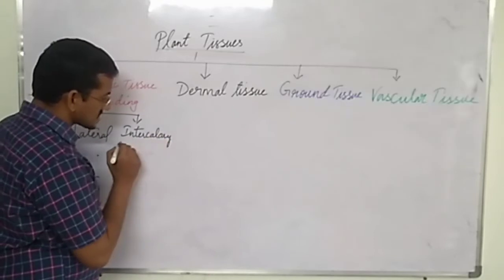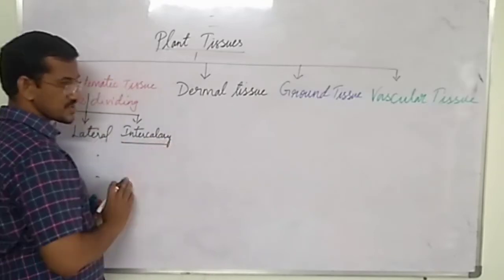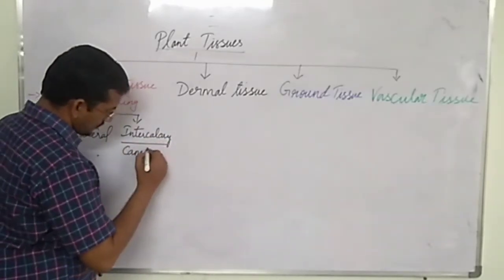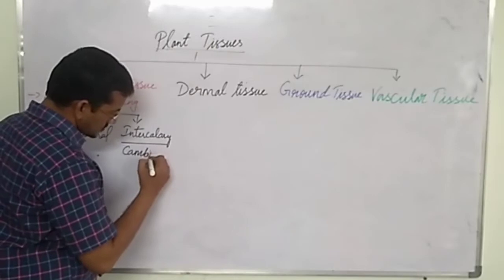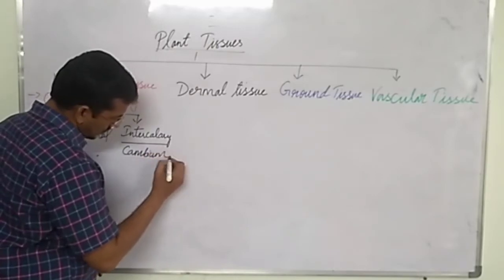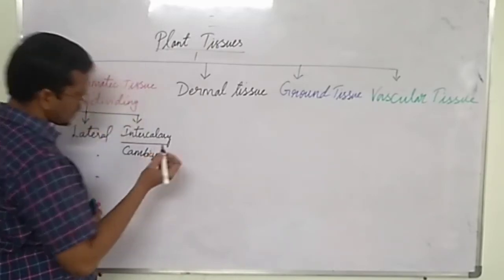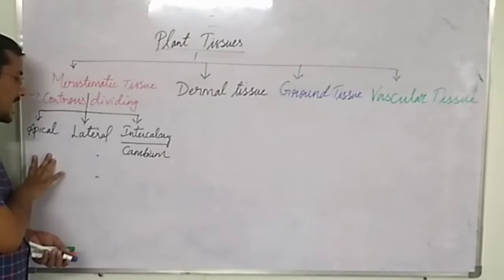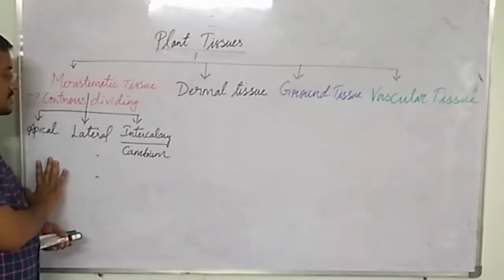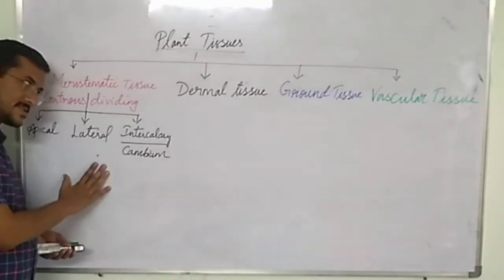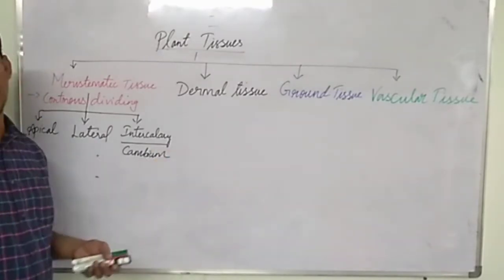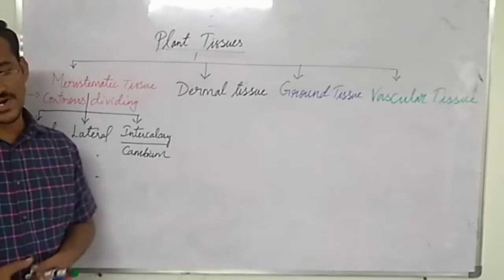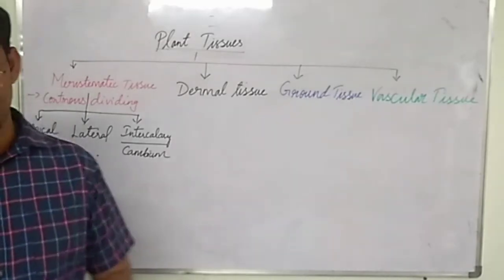Intercalary meristematic tissue is also called cambium. Now let us see where apical, lateral, and intercalary meristematic tissues are present and what their functions are.